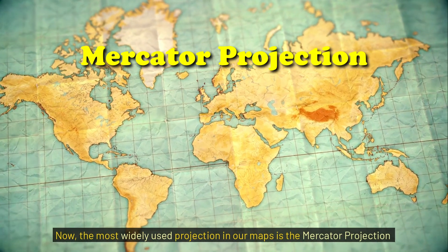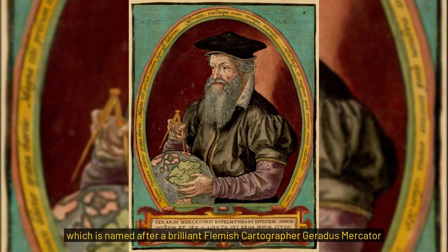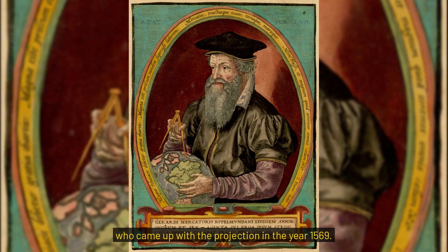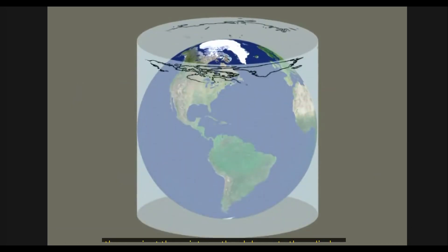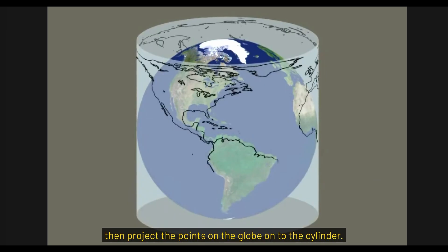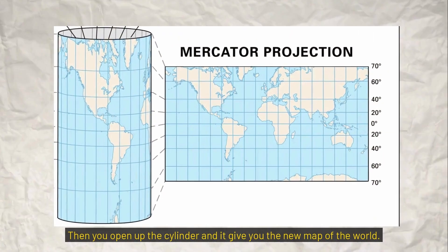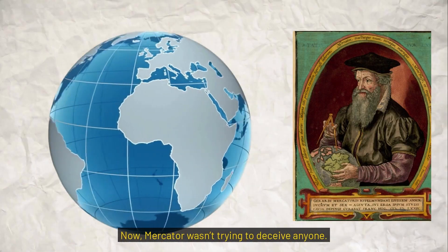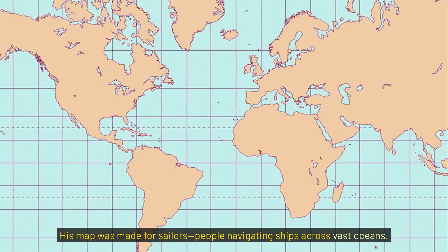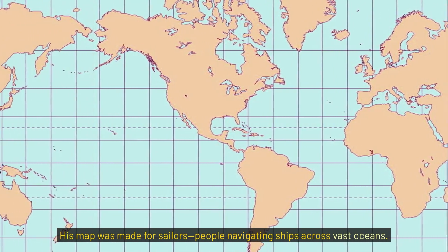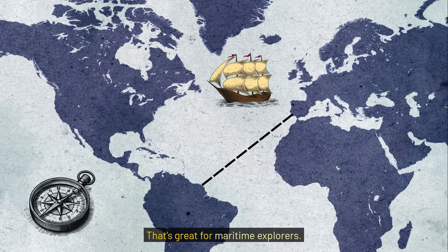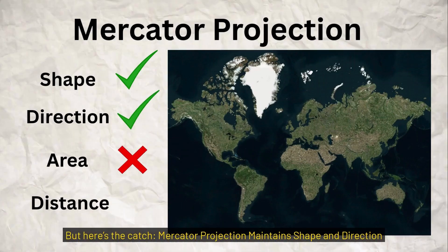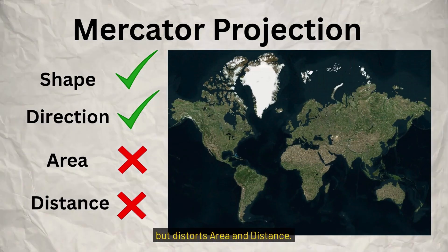The most widely used projection in our maps is the Mercator projection, named after a brilliant Flemish cartographer Gerardus Mercator, who came up with the projection in 1569. How it works: you take a hollow cylinder and put it over the globe, project the points on the globe onto the cylinder, then open up the cylinder to get a flat map. Mercator wasn't trying to deceive anyone — his map was made for sailors navigating ships across oceans. His projection made straight-line navigation easy by preserving angles.